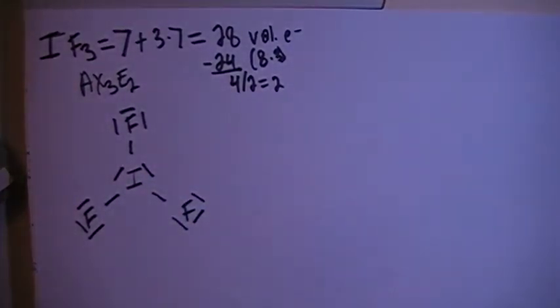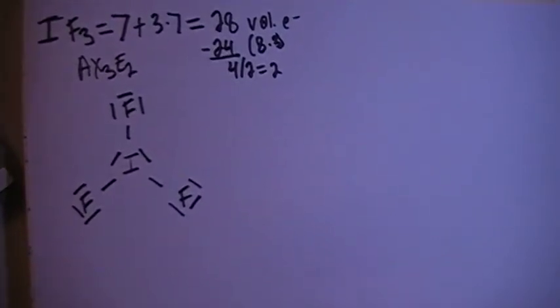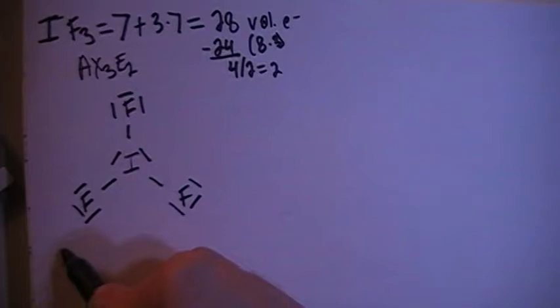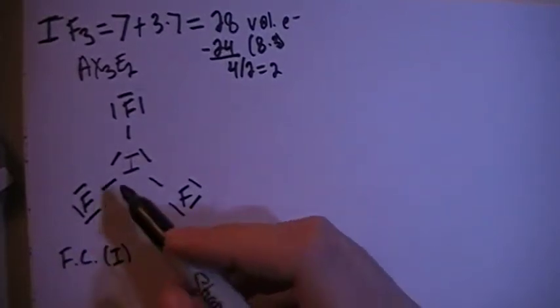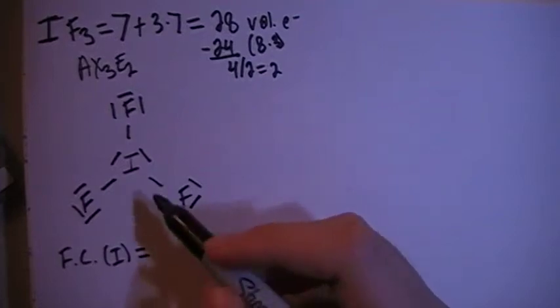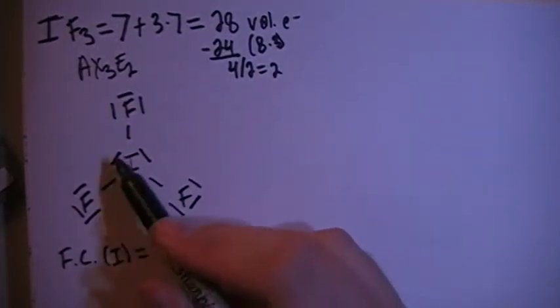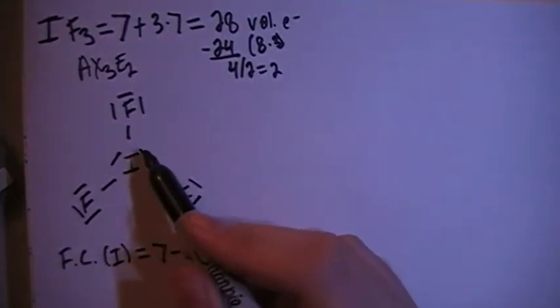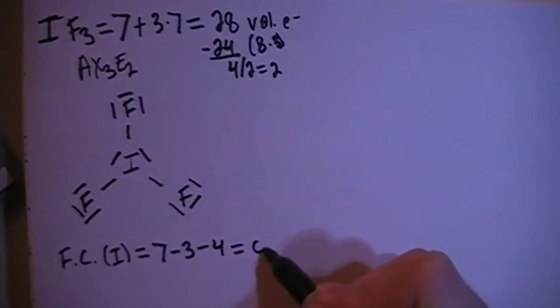And that's going to end up being a final structure, but let's just go ahead and verify that by checking the formal charges. So the formal charge on the central iodine is going to be the 7 valence electrons brought in minus 1, 2, 3 single bonds minus 1, 2, 3, 4 non-bonding electrons for a formal charge of 0.